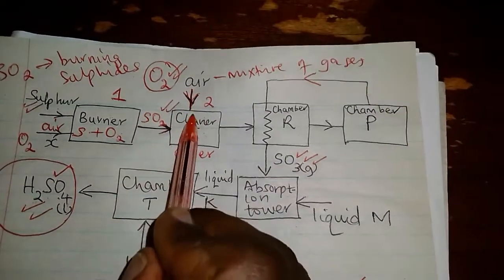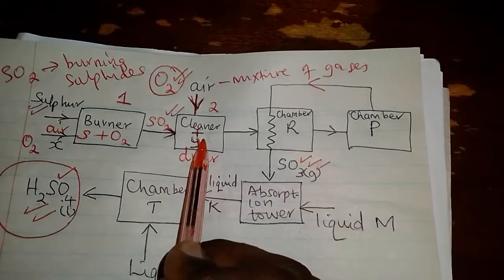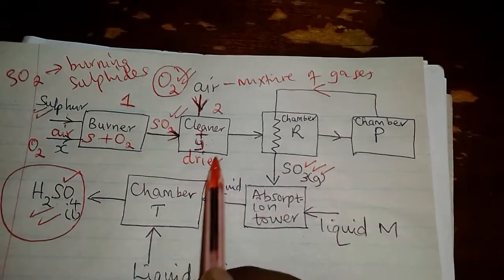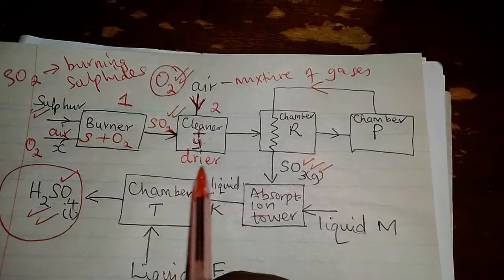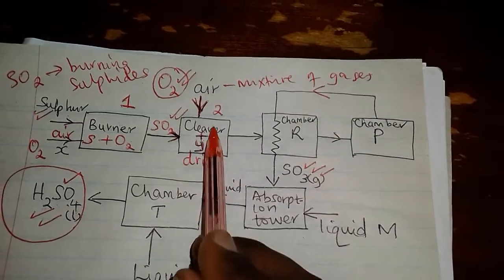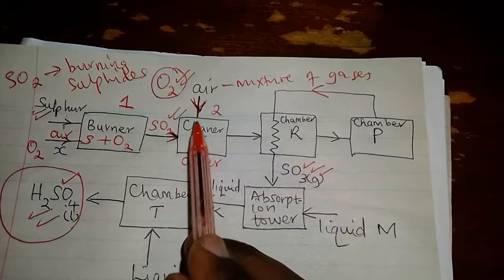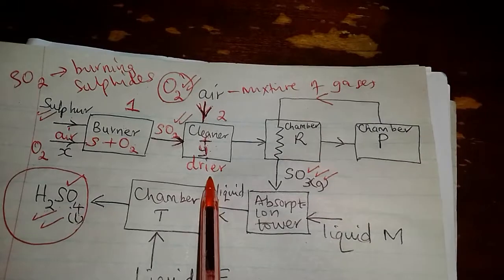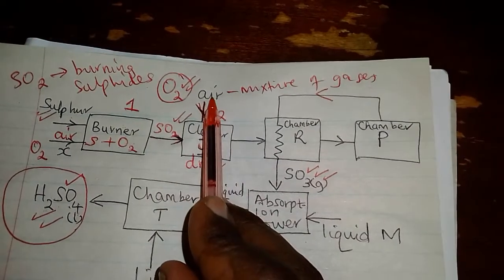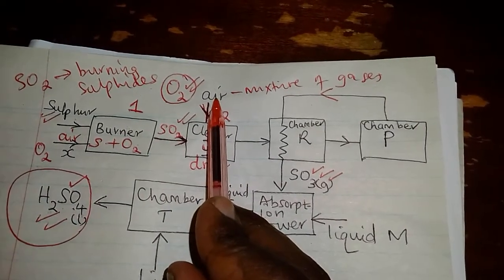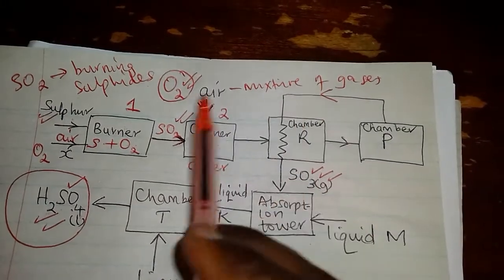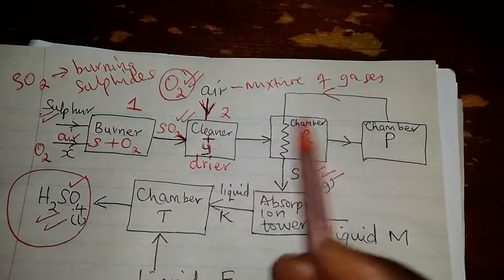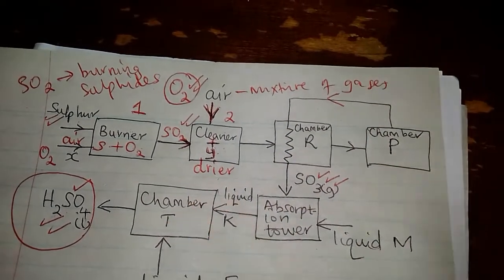The SO2 and the oxygen have to come into this chamber, where they get cleaned and they get dried. This is a cleaner and this is a dryer — a cleaning and drying chamber. SO2 and oxygen, or air, must be having impurities like carbon dioxide, dust particles, rare gases, nitrogen and other components, and even sulfur dioxide also has these impurities.